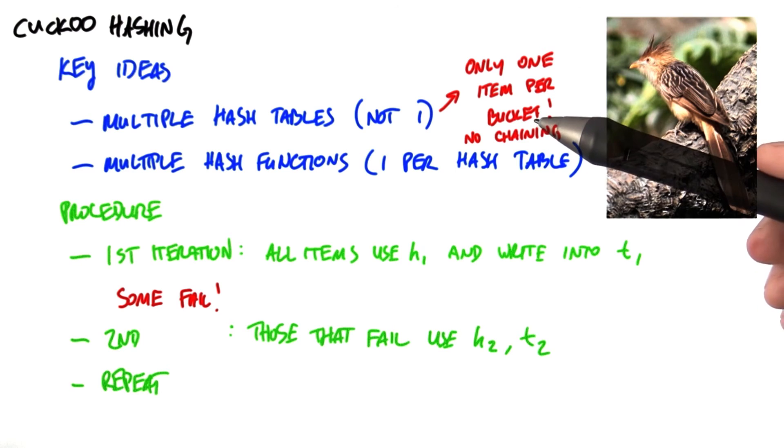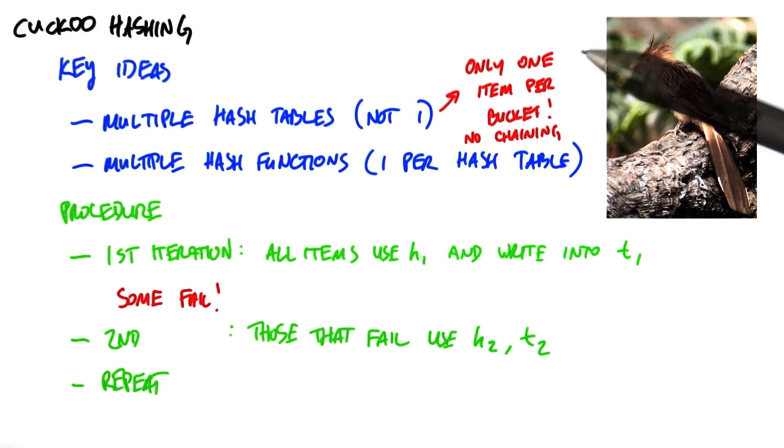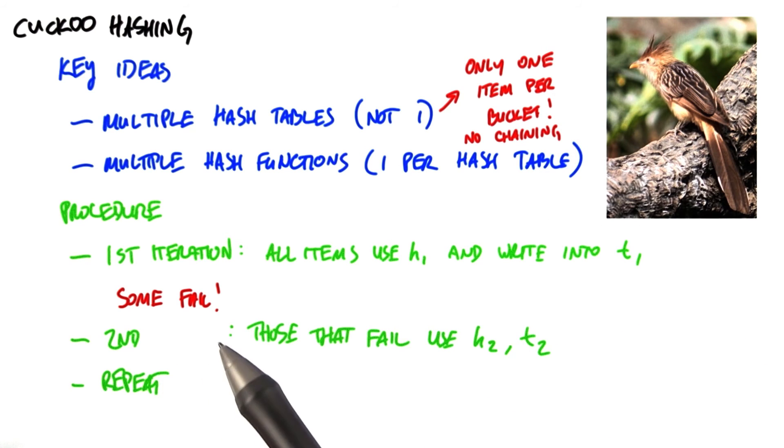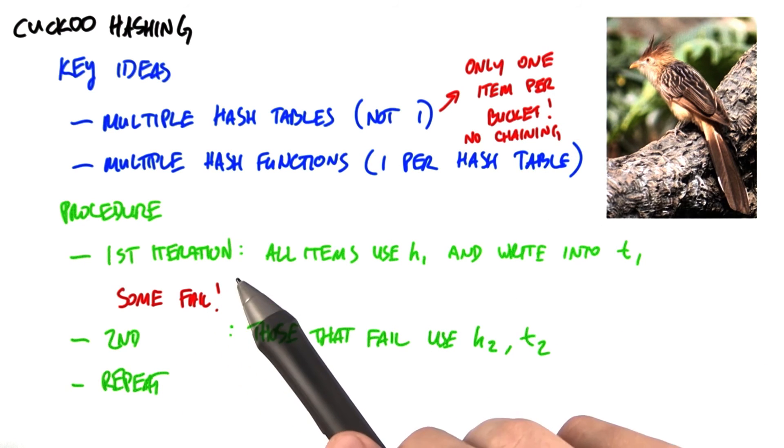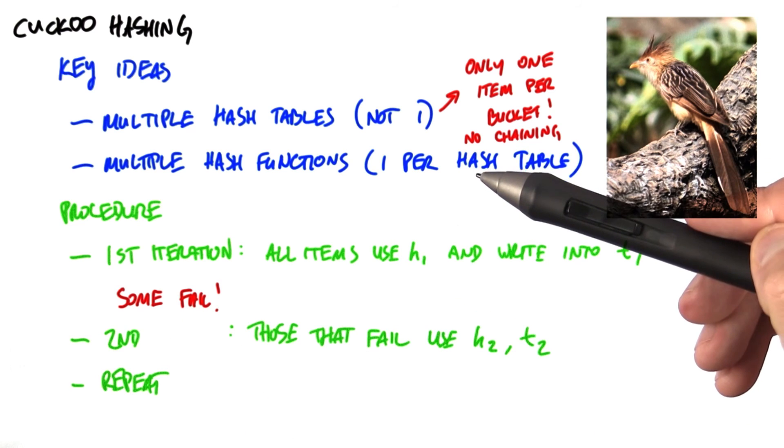If n items try to write into one hash bucket, we only require that one of them succeeds. And it doesn't really matter which one. So then, those that fail, we're going to take all the ones that are left over that failed, and we're going to use the second hash function to try to hash into the second hash table, and so on.